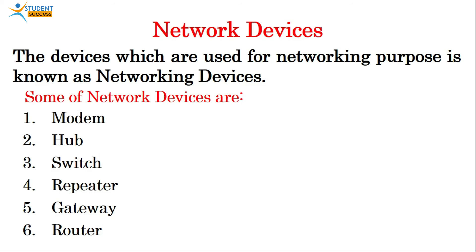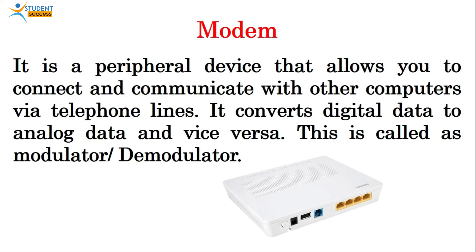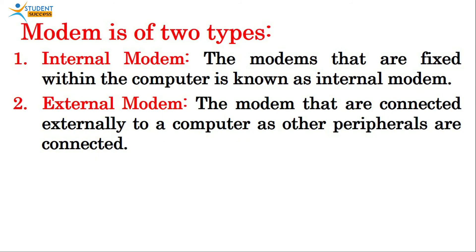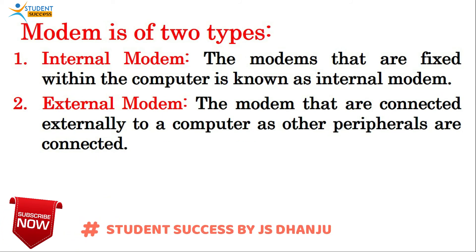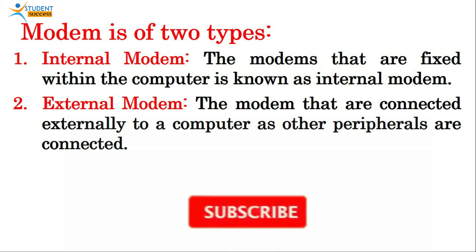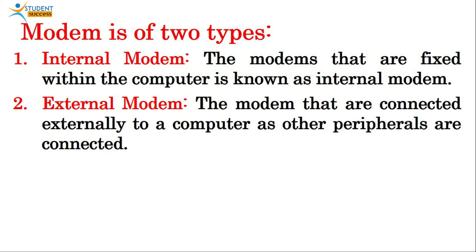Network devices are the devices used for networking purposes. The networking devices we will discuss are: modem, hub, switch, repeater, gateway, and router. The first is modem — a peripheral device that allows you to connect and communicate with other computers via telephone lines. It converts digital data into analog data and analog data into digital form — this is called modulator/demodulator. It is commonly used in homes, offices, and buildings for Wi-Fi purposes. Modem is of two types: internal modem (fixed within the computer) and external modem (connected externally as a peripheral).